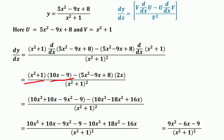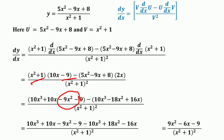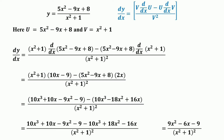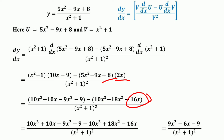Expanding (x² + 1)(10x − 9): x² times 10x = 10x³, 1 times 10x = 10x, x² times (−9) = −9x², and 1 times (−9) = −9. Then expanding (5x² − 9x + 8) times 2x: 5x² times 2x = 10x³, −9x times 2x = −18x², and 8 times 2x = 16x, whole divided by (x² + 1) squared.